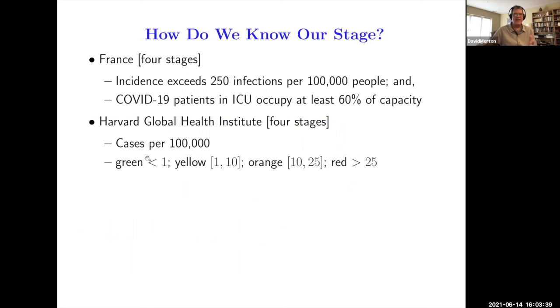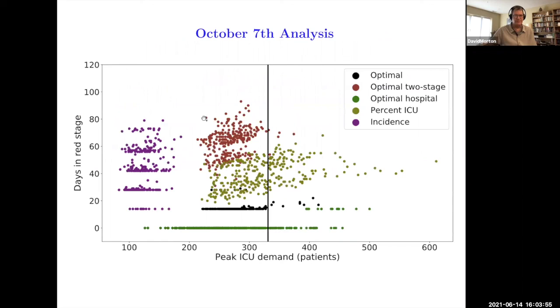I mentioned this French system, and I mentioned the Harvard Global Health Institute system. How well does our system compare? They say, look at the current case count. If the number of people per 100,000 is less than 1, is between 1 and 10, 10 and 25, bigger than 25, these are the stages you should be at. France has a different system. Here's just one plot to show how well we do.